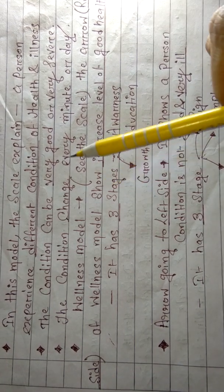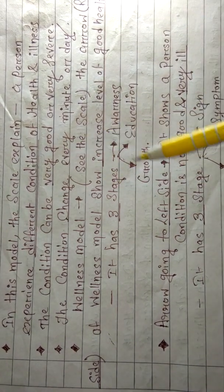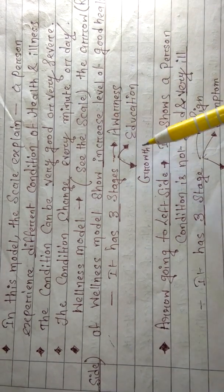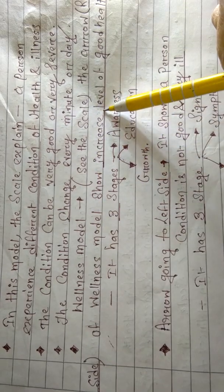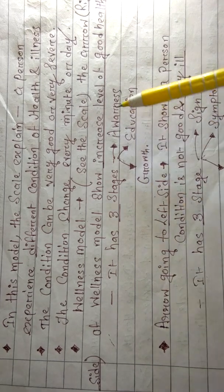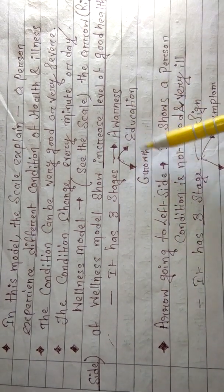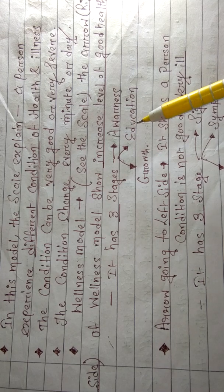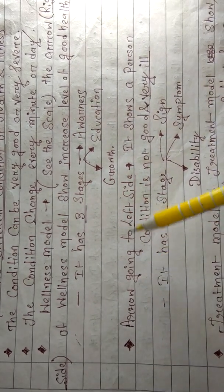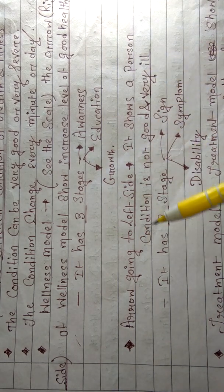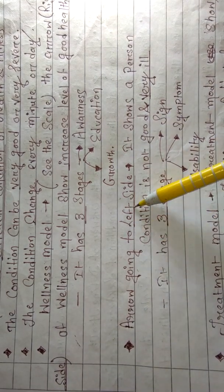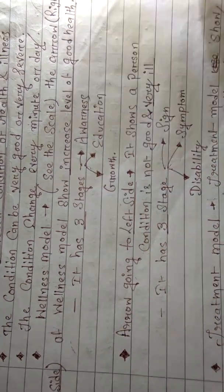Hello again, let's complete the rest of the topic of the health-illness continuum model. We studied the wellness model, which has three stages: awareness, education, and growth. By achieving these three stages we can achieve good health. Now we will study the arrow going to the left side, which shows a person's condition is not good or very ill.